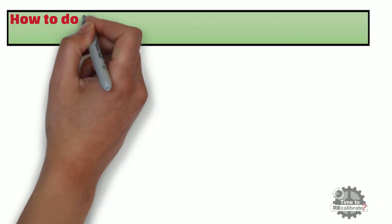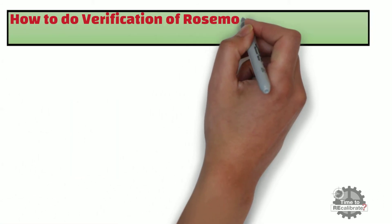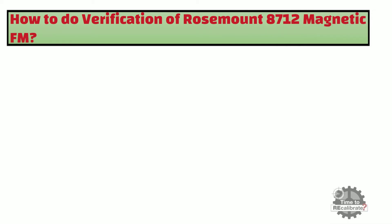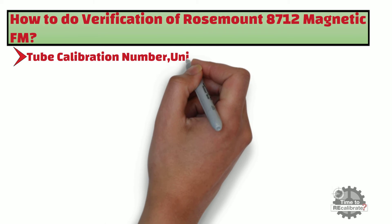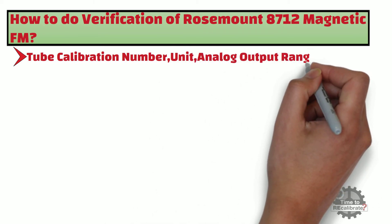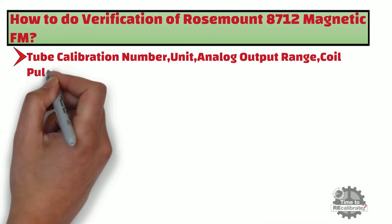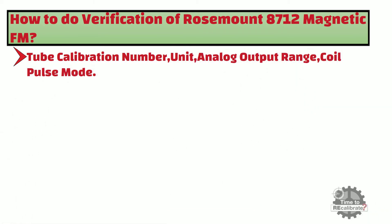Let's learn how to do verification of the Rosemount 8712 magnetic flowmeter. Step 1: Note down all existing parameters of the flowmeter, such as flow tube calibration number, unit, analog output range, and coil pulse mode. We are going to change all these parameters, so it is important to note them down before making any changes to the transmitter.